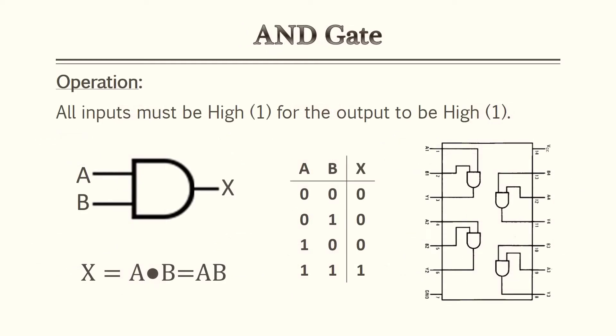The most popular gate in the digital world is the AND gate. It's very likely you'll see this gate used in most of your problems and examples throughout your studying for the PE exam, so it's best to understand how it works. All inputs must be high for the output to be high for an AND gate. So if you have multiple inputs — such as three or four input AND gates — all inputs must be high for the output to be high.